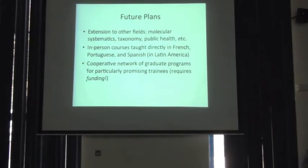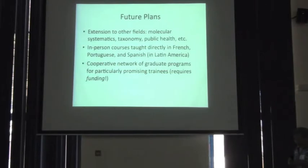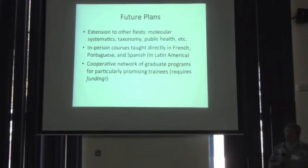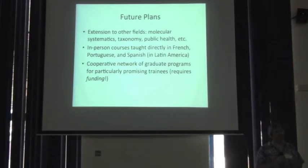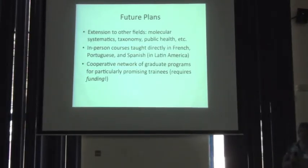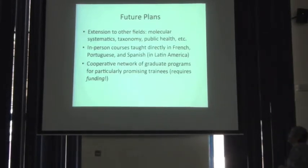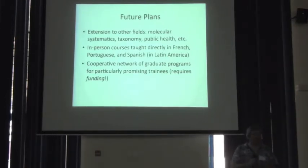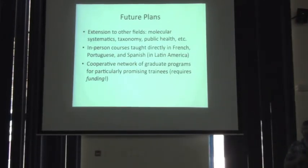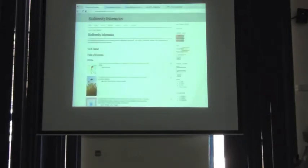In the long term, this JRS course series is funded over three years. Beyond that, the idea is to extend this to other fields — we already have people interested in organizing follow-ons covering topics such as molecular systematics, taxonomy, public health applications, and others. We're also organizing in-person courses across Latin America. Ideally, what I really want to do is secure funding for a cooperative network of graduate training — essentially providing fellowships to continue this initial training at a deeper level.